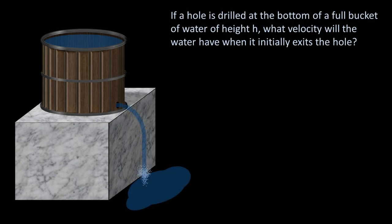First, imagine we have a bucket on top of a marble block. If a hole is drilled at the bottom of a full bucket of water whose height is h, what velocity will the water have when it initially exits the hole? This problem may seem unexpected at first since a bucket of seemingly stationary water looks quite different than the conduit I referred to a second ago.